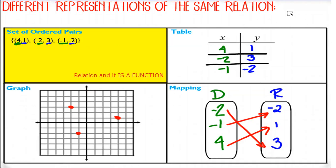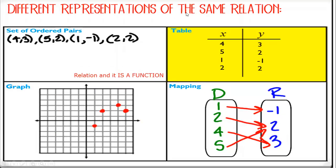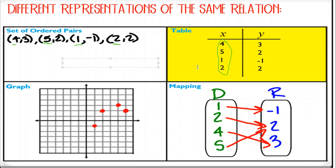Let's look at the next one. We look at the X values: my inputs are 4, 5, 1, and 2. Do I repeat any of my X values? No. So for this one, this is a relation and it is a function. None of the X values repeat. Let's try the next one — we don't even care about the Y values; it's just those X values. My X values here are 3, 2, negative 1, negative 4, and negative 4. Those negative fours repeat. So this is not a function — this is just a relation.